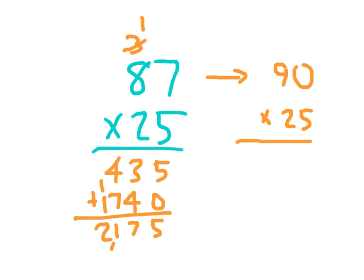90 times 5 is 450. That 2 is worth 20, so we place a 0. 2 times 0 is 0. And 2 times 9 is 18. Finally, 2,250 is our estimated product.